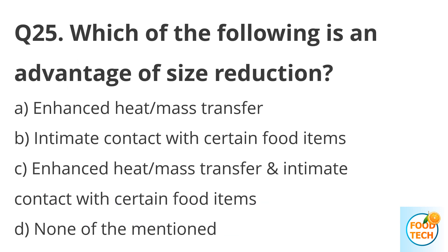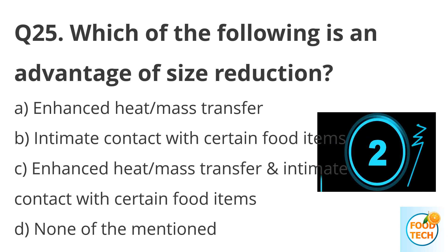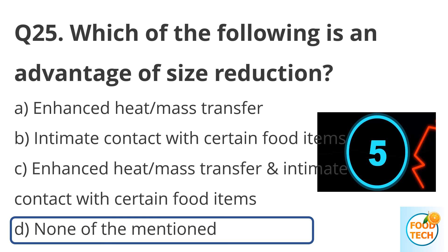Question 25. Which of the following is an advantage of size reduction? A. Enhanced heat and mass transfer. B. Increased contact with certain food items. C. Enhanced heat and mass transfer, and increased contact with certain food items. D. None of the mentioned. Answer D. None of the mentioned.